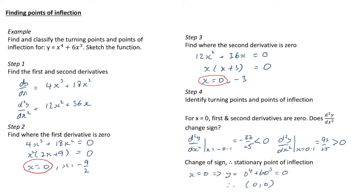We need the y-value here, so we substitute x = 0 into the original function: 0⁴ + 6×0 = 0. So we have the point (0, 0).